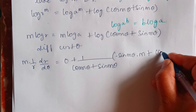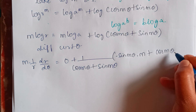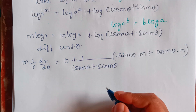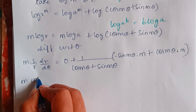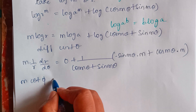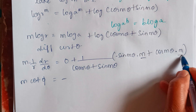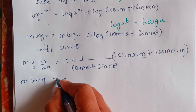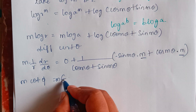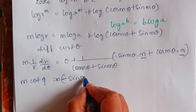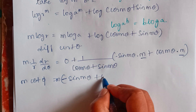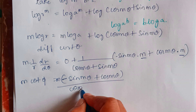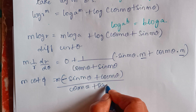The differentiation of sin mθ is cos mθ × m. So the right-hand side becomes: 1/(cos mθ + sin mθ) × (−sin mθ × m + cos mθ × m). I can take m as common, giving m(−sin mθ + cos mθ) divided by (cos mθ + sin mθ).